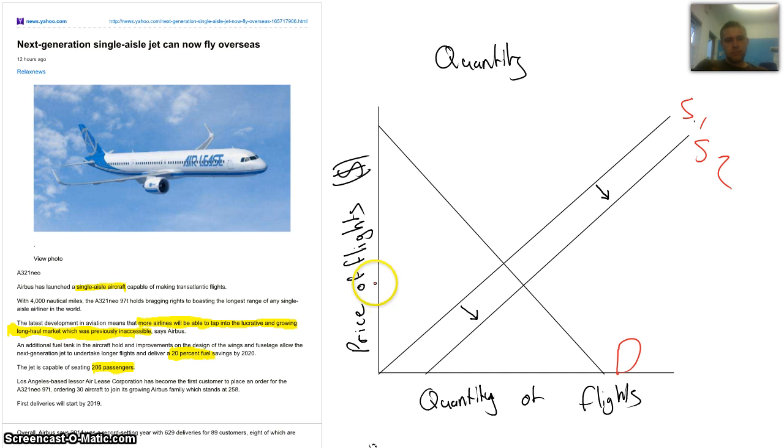Making the point of equilibrium go from, that's a terrible line, from there to there, meaning that the price of flights goes down and the quantity of flights goes up.